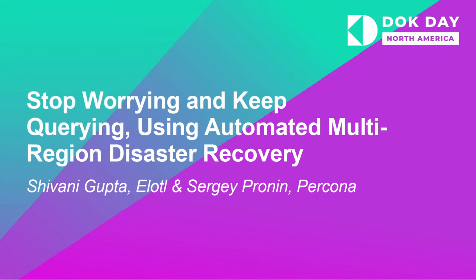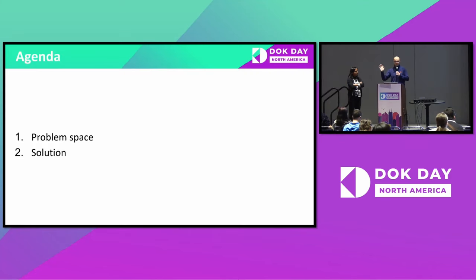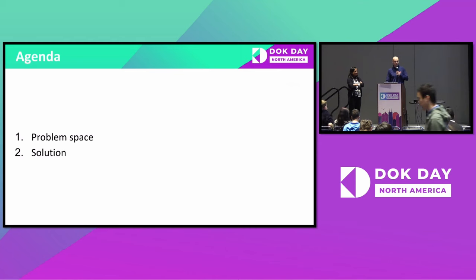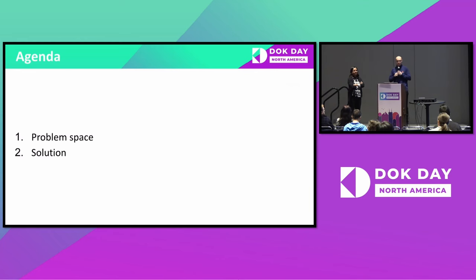Today we're going to talk about automated multi-region disaster recovery in Kubernetes for Postgres. The agenda at a super high level covers problem space and solution. I'm Sergei from Percona, doing products there. Shivani is a product leader at Elotl, and Jan is a software engineer at Elotl. I'll be a troublemaker talking about the problem space, and Shivani will talk about the solution.